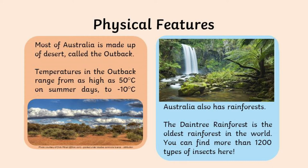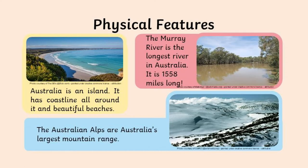Australia also has rainforests. The Daintree Forest is one of the oldest rainforests in the world, where you can find more than 1,200 different types of insects. Australia's coastline is also a physical feature — it is an island with coastline all the way around it, famous for some of its most beautiful beaches. You've also got the Murray River, which is the longest river in Australia at 1,558 miles long.